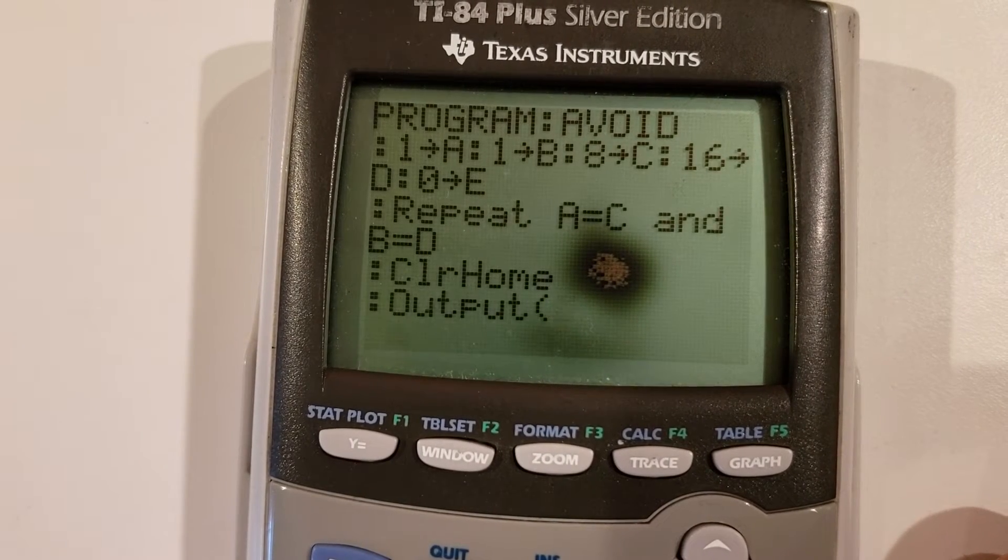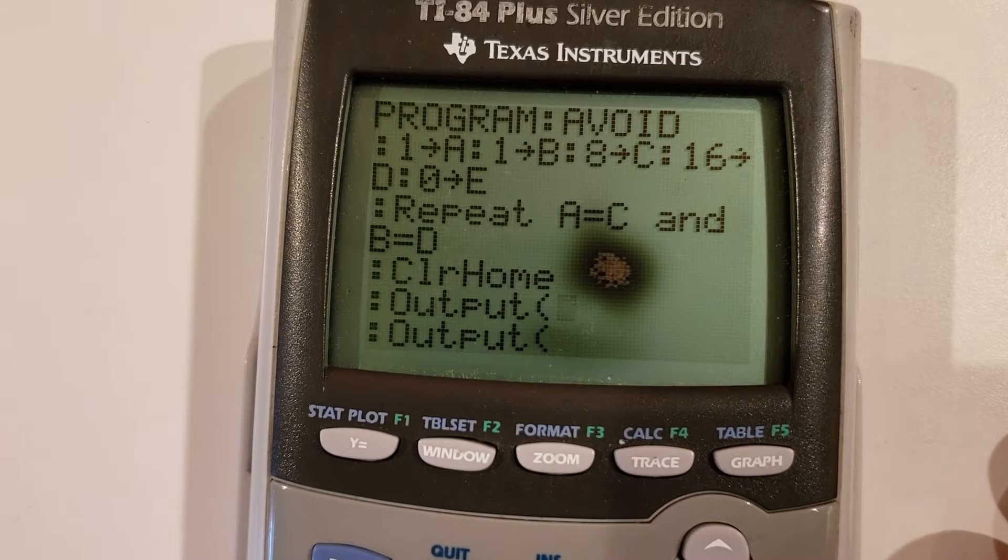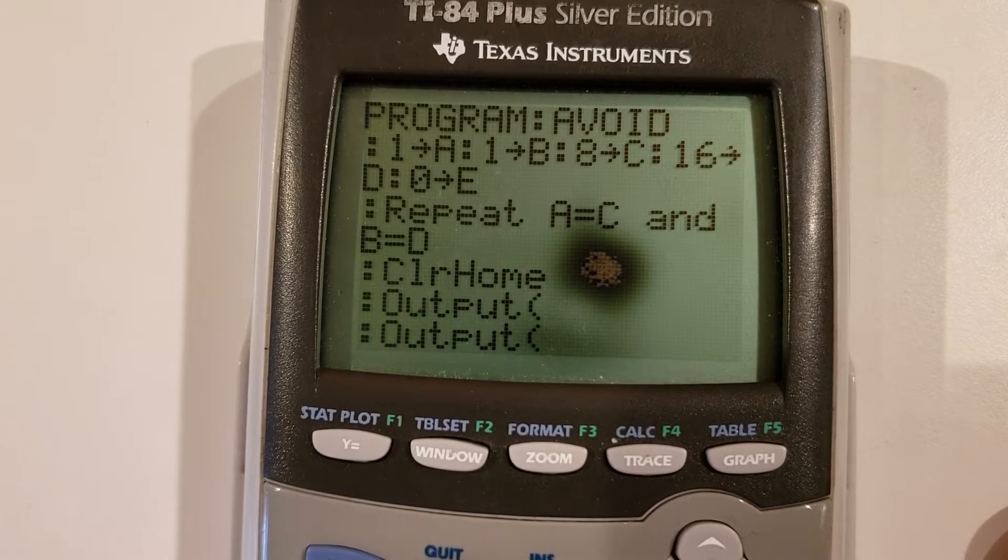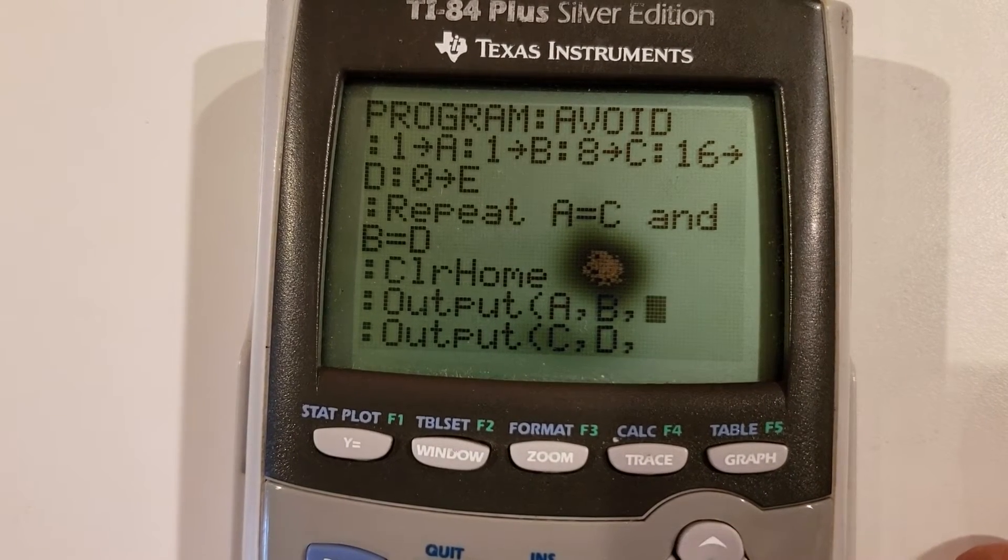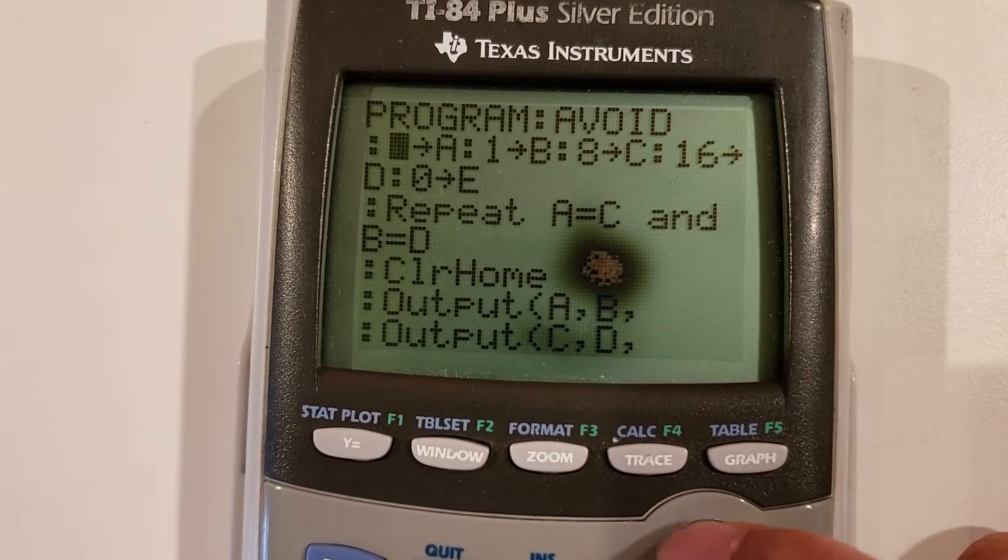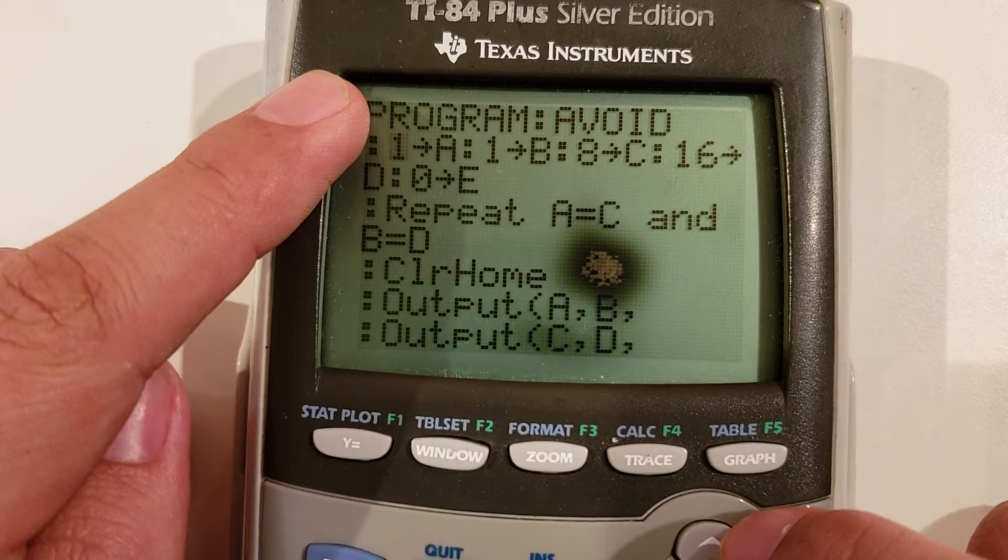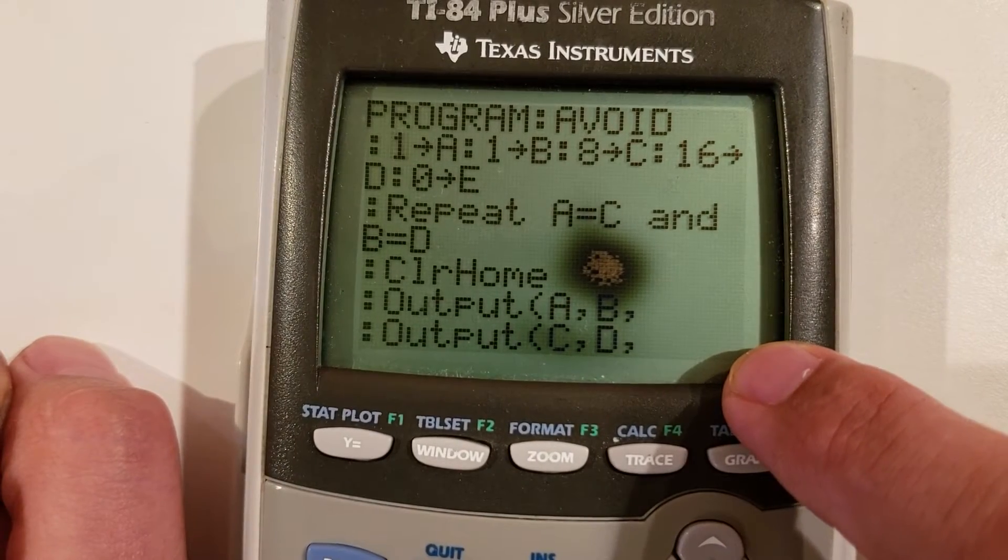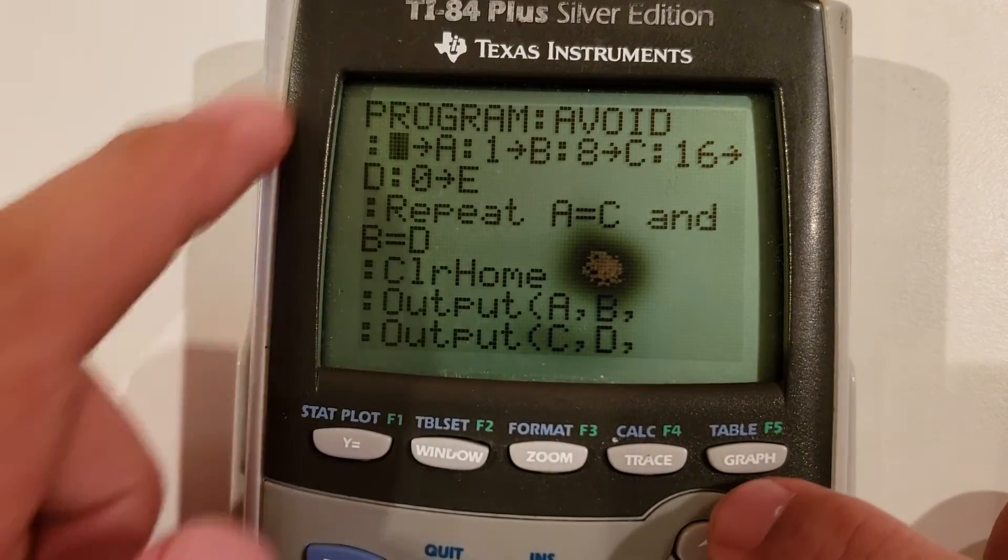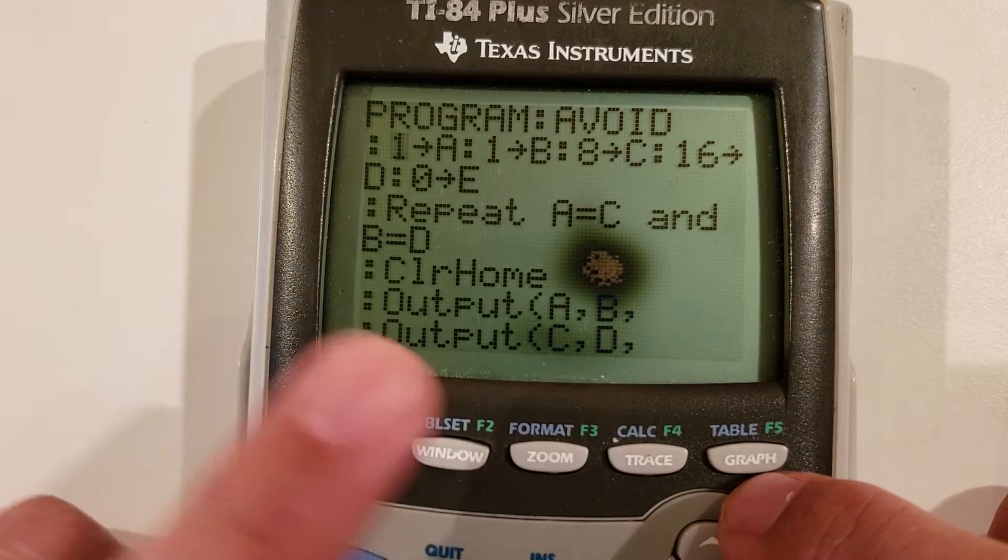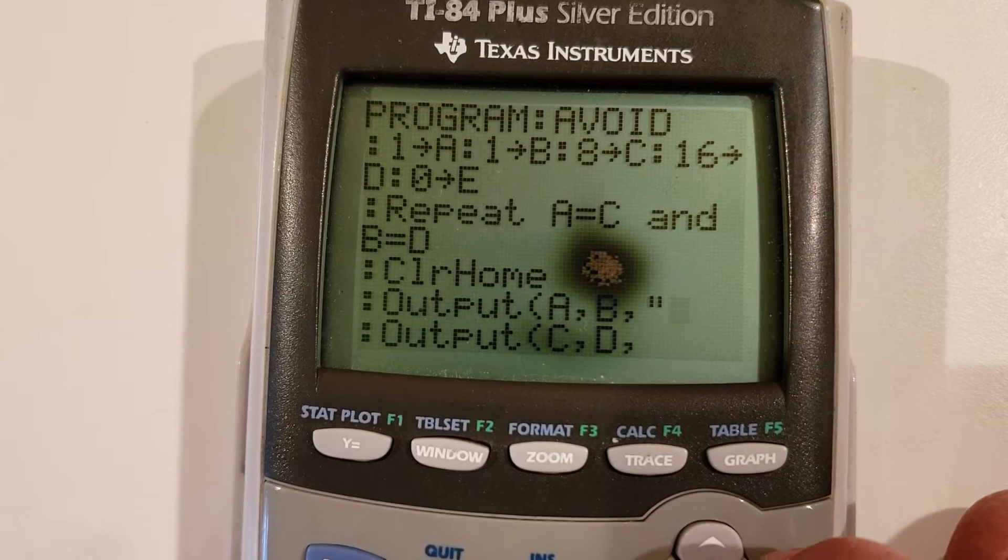Next up, we're going to need two output statements. One, two, count them up. One of these output statements will output the player coordinates. The other will output the computer coordinates. The way an output works is the calculator has an 8 by 16 grid. Starting up in the top left corner, this is 1,1, all the way down to 8,16. The output finds the row number, then finds the column number. A will be the row number. B will be the column number. I like to set the player as an O.